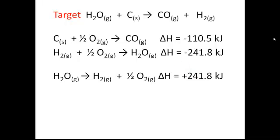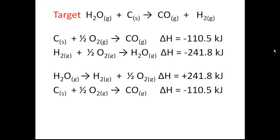Now we'll look at our second reactant in our target equation, carbon solid. We notice right away that the carbon solid occurs on the product side of the first equation. So we don't have to do anything with that equation except write it down. And since we're not doing anything with it, we don't change the delta H at all.